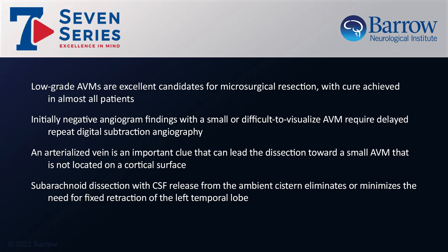In conclusion, low-grade AVMs are excellent candidates for microsurgical resection, with cure achieved in almost all patients. An initially negative angiogram with a small or difficult-to-visualize AVM requires delayed repeat digital subtraction angiography. An arterialized vein is the most important clue that leads the dissection towards a small AVM not visualized on the cortical surface. Subarachnoid dissection with CSF release from the ambient cistern eliminates or minimizes the need for fixed retraction of the left temporal lobe.